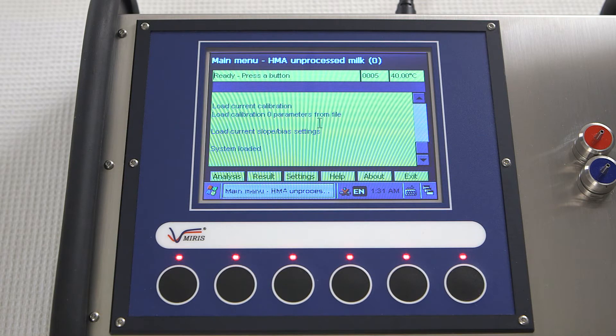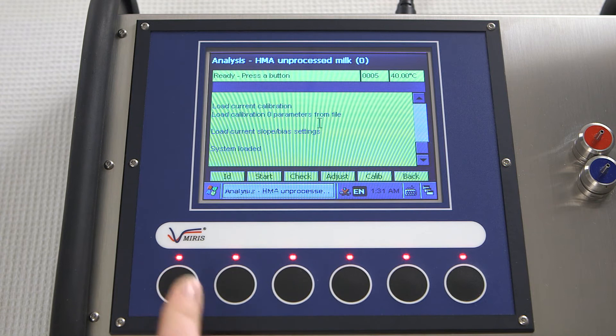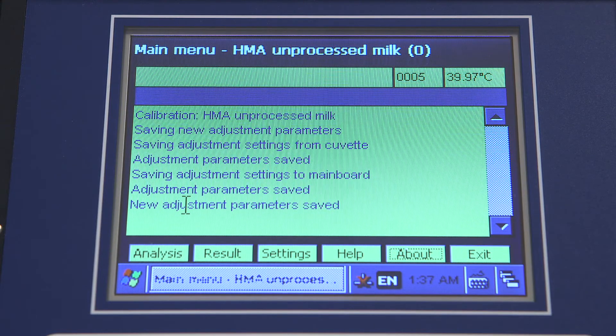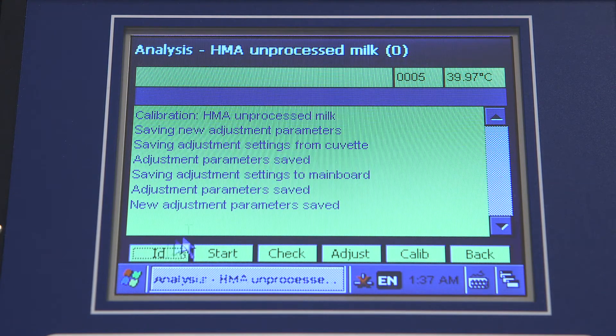After cleaning, press the analysis button and select the analysis mode for your samples. You can choose between modes for either fresh unprocessed milk or thawed and homogenized milk.